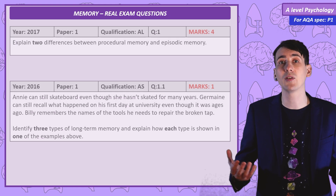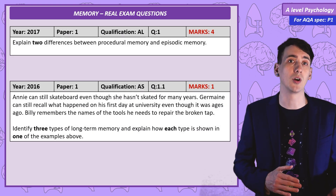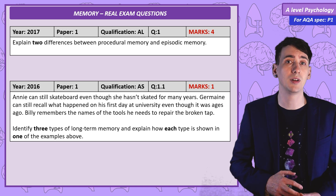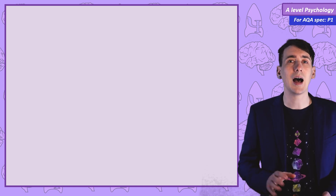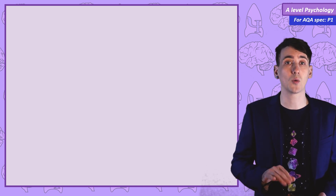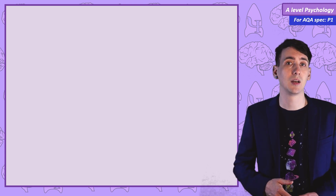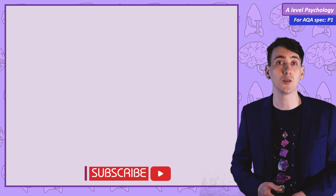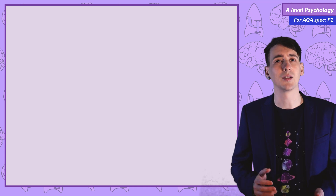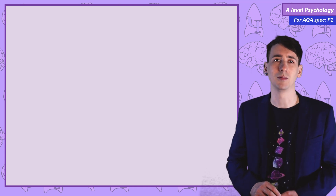Now have a go at this real exam question on types of long-term memory. If you are a PsychBoost patron at the neuron level or above, you can access the tutorial on psychboost.com, where I will talk you through a model answer for this question and general tips. For everyone else, don't forget to subscribe so you don't miss the videos released right up to your exams. I'll see you in the next PsychBoost video: the working memory model.